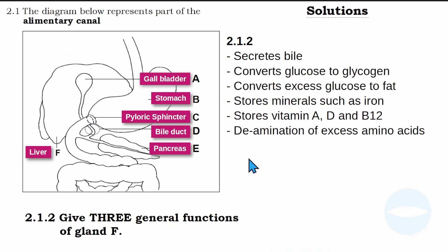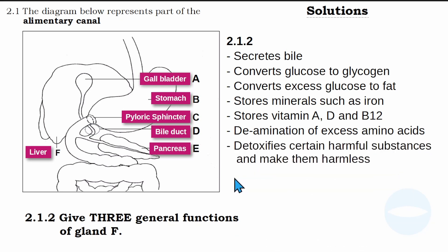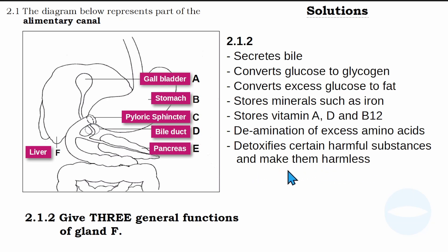Another function is the deamination of excess amino acids — this is a function of the liver. And then the last function: the liver detoxifies certain harmful substances and makes them harmless. So if there is some harmful substance that we ate, the liver will try to make it harmless. These are the functions of the liver, but you must write only three.